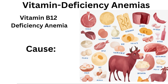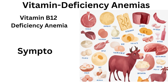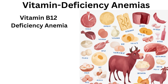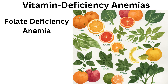Symptoms of vitamin B12 deficiency anemia include fatigue, weakness, pale or jaundiced skin, numbness or tingling in the extremities, and neurological symptoms if severe. Folate deficiency anemia is caused by inadequate dietary intake or impaired absorption of folate (vitamin B9), which is essential for red blood cell formation.